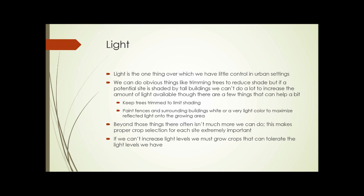Keep trees trimmed to limit shading. Paint fences and surrounding buildings white or a very light color to maximize reflected light onto the growing area — this can actually make a huge difference depending on the angle that the light comes from, and can make the difference between being very successful and not being very successful. But beyond those things, there isn't much more we can do.